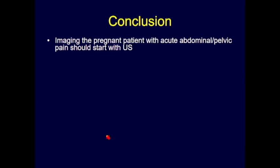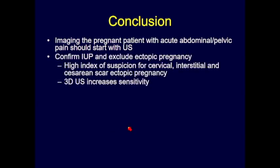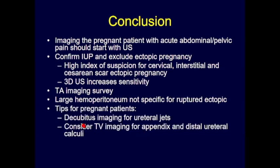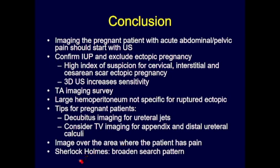Final thoughts: imaging the pregnant patient with acute abdominal-pelvic pain should start with ultrasound. Confirm an IUP and exclude ectopic pregnancy. Maintain a high index of suspicion for cervical, interstitial, and cesarean scar ectopic pregnancy. 3D ultrasound increases sensitivity and specificity and gives more confidence. Take transabdominal images first, use decubitus imaging for ureteral jets, and consider transvaginal imaging for the appendix and distal ureteral calculi. Image where the patient has pain, broaden your search pattern, and add value as a radiologist.